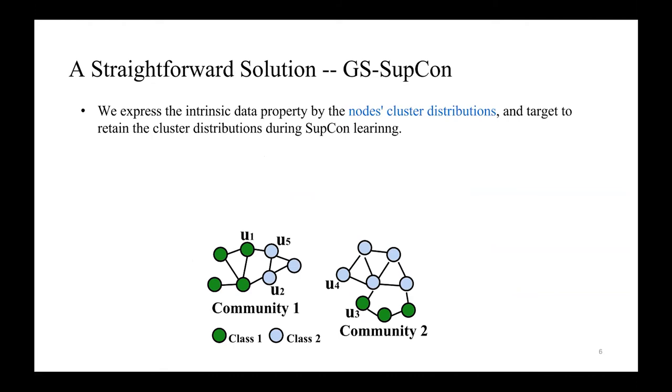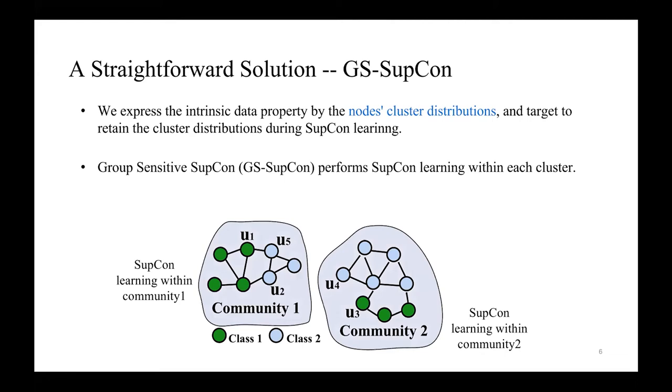To solve this problem, we express the intrinsic data property by the node's cluster distributions and target to retain the cluster distributions during supervised contrastive learning. A straightforward solution to achieve this goal is to perform supervised contrastive learning within each cluster. We call this solution group-sensitive SupCon or GS-SupCon. However, this straightforward solution could overlook some potentially useful positive sample pairs, such as U1 and U3, because they come from the same class, but they are partitioned into different clusters.